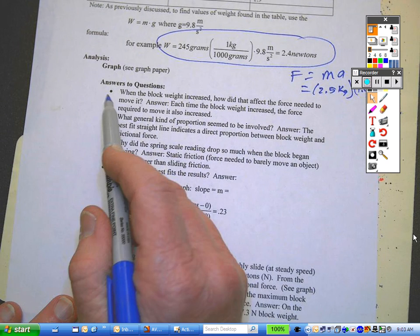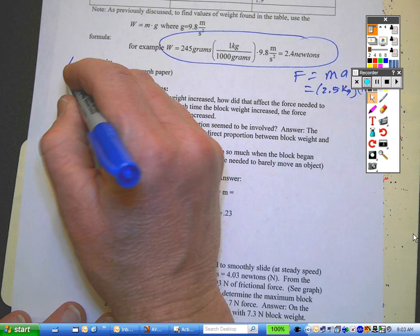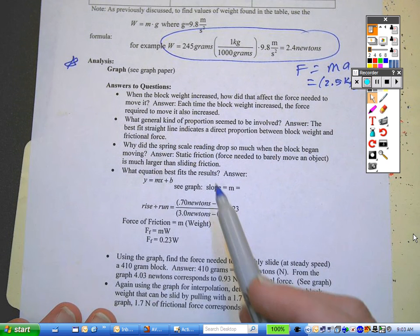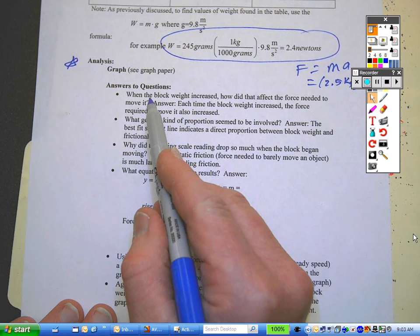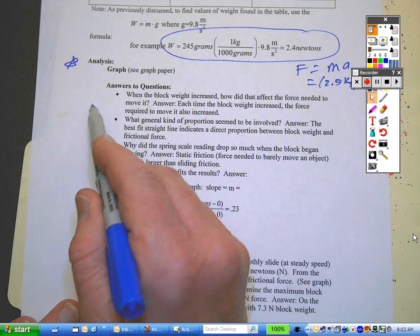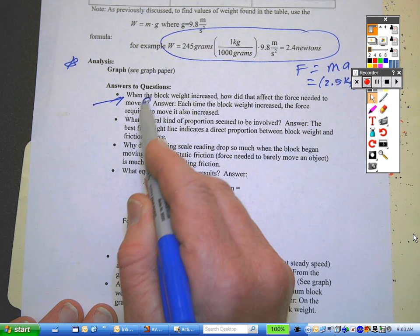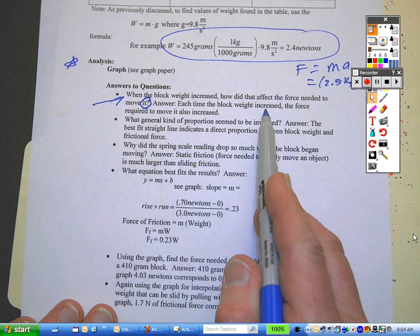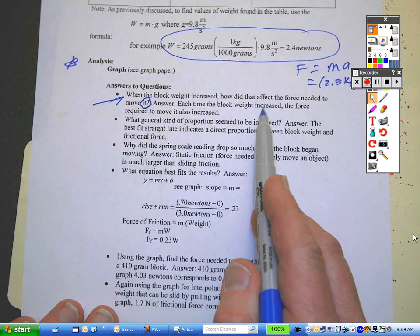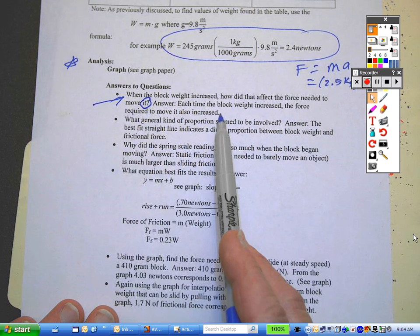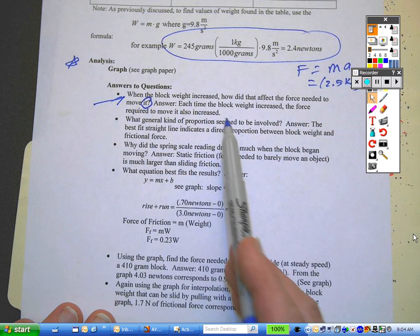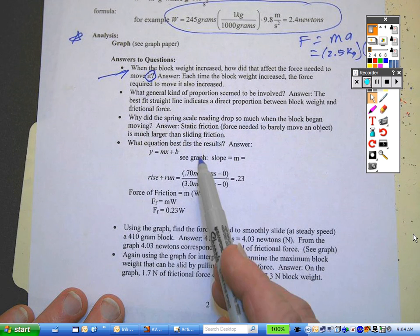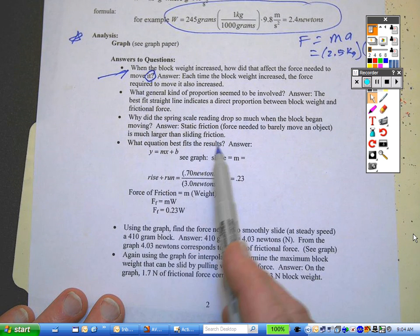The analysis section is the most important part. The analysis section tells us the answers to questions. Of course, the reader of this will not know what the question is. So it's very important for you to type the question. Look how I've done that. I typed the question. Then I put the answer in. The answer should explain to the reader the logic of how you came up with the answer.